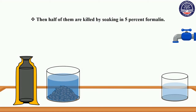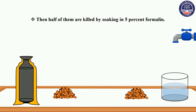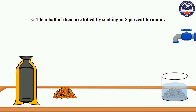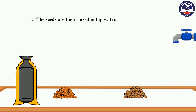Two of them are killed by soaking in five percent formalin. The seeds are then rinsed in kept water.